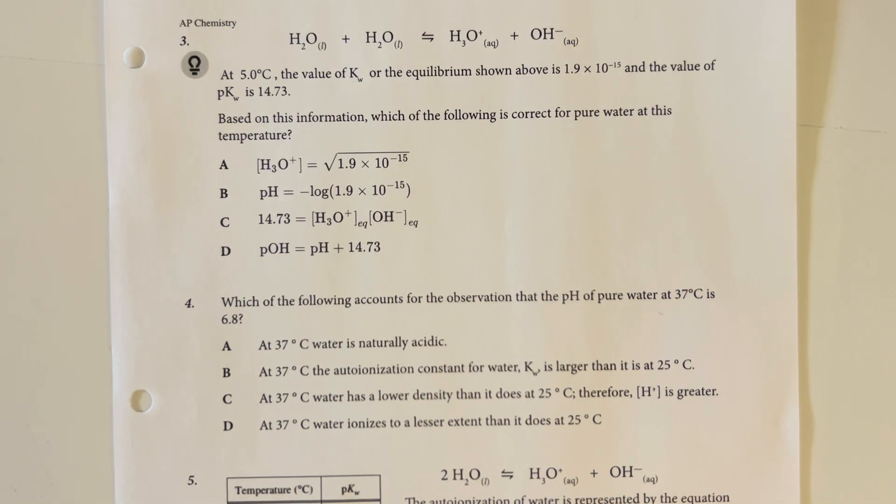At 5 degrees Celsius, the value of kW for the equilibrium shown above is 1.9 times 10 to the negative 15th, and the value of pKW is 14.73. Based on this information, which of the following is correct for pure water at this temperature?